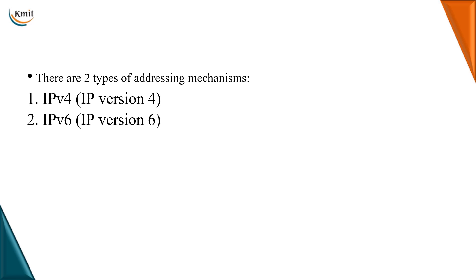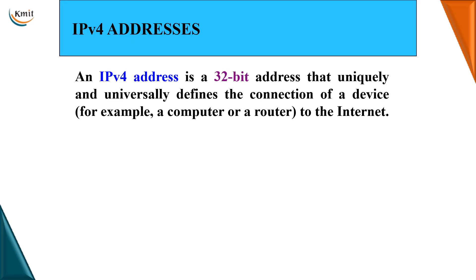There are two types of addressing mechanisms — IPv4 and IPv6, that is Internet Protocol version 4 and Internet Protocol version 6. Now let us learn about IPv4 addresses. The IPv4 address is a 32-bit address that uniquely and universally defines the connection of a device — for example, a computer or a router — connected to the internet.